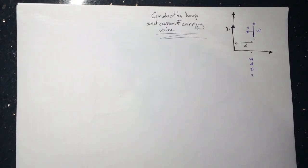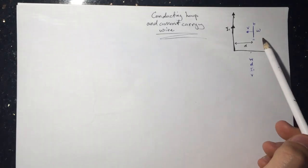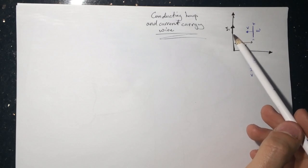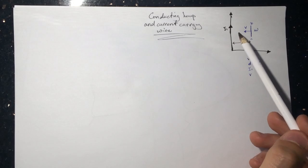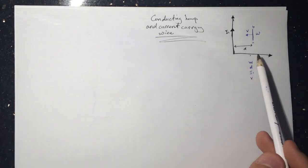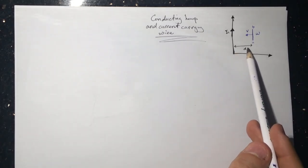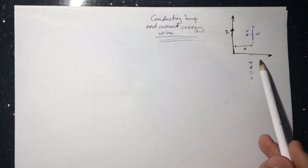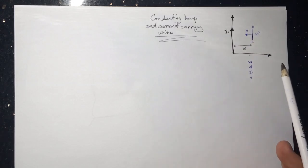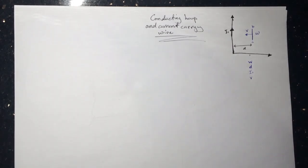Hi guys, this is the conducting loop and current-carrying wire smart physics problem. We have a wire moving with velocity going to the left, and there is a wire going in the positive y direction (upward) with current. The information given is that it's distance d away, and the width or length is called W.